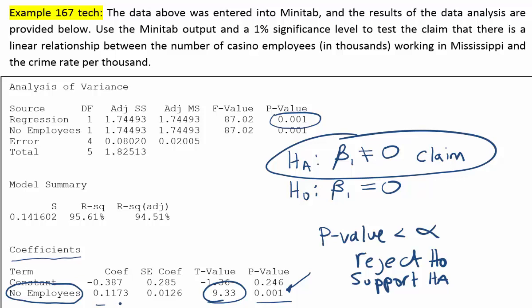If you look at the value of the coefficient here, you can tell that it's positive. What that means is that the relationship seems to be positive — a positive relationship. As the number of casino employees increases, the crime rate seems to go up as well.